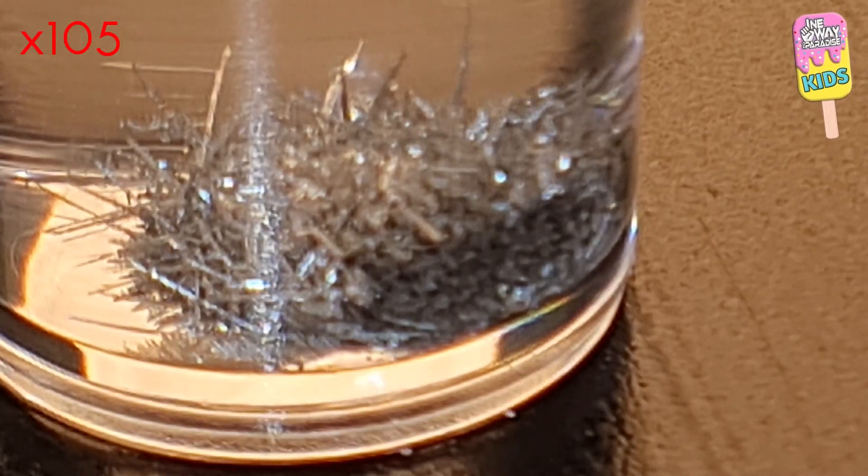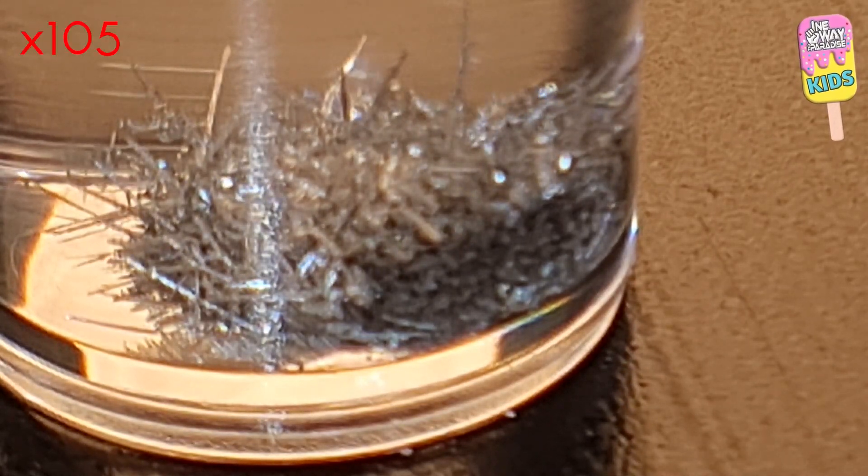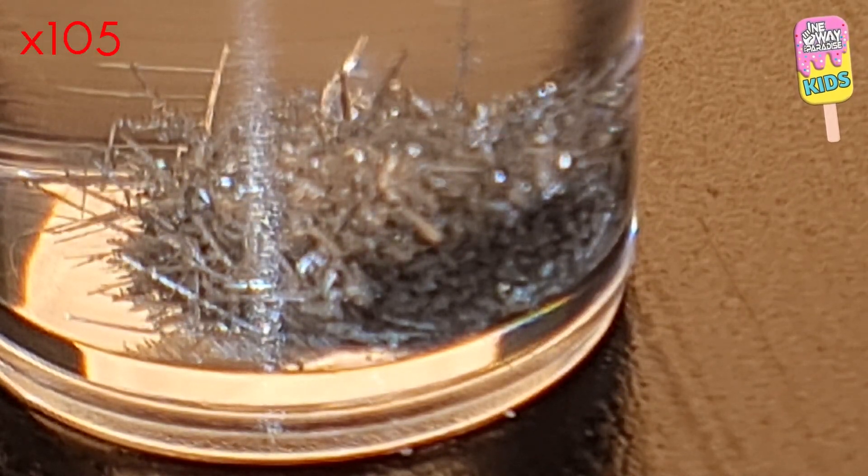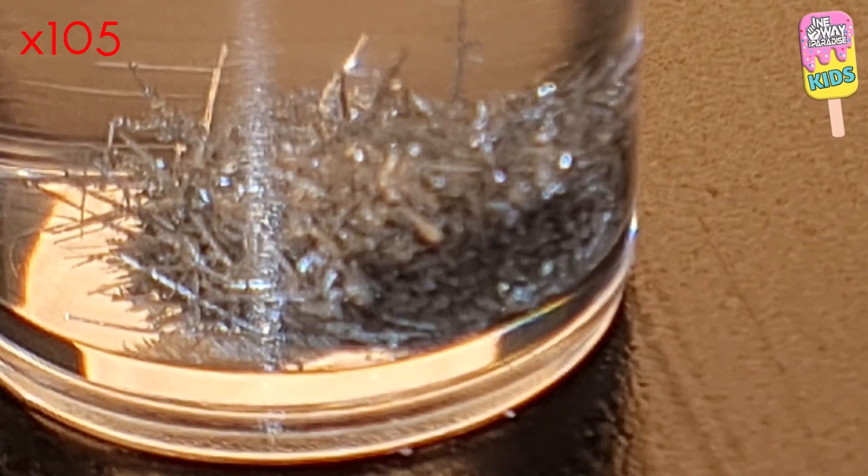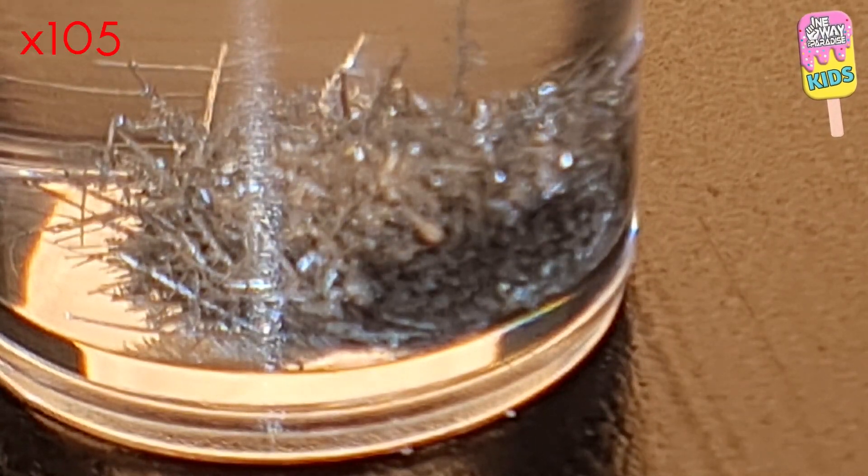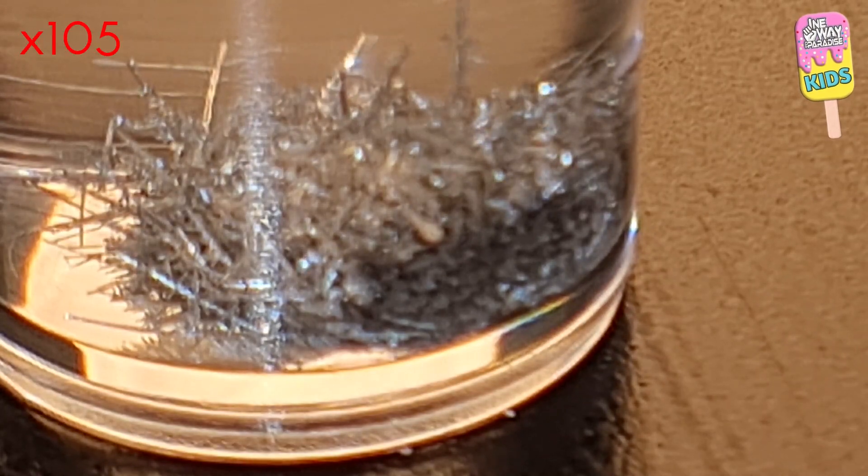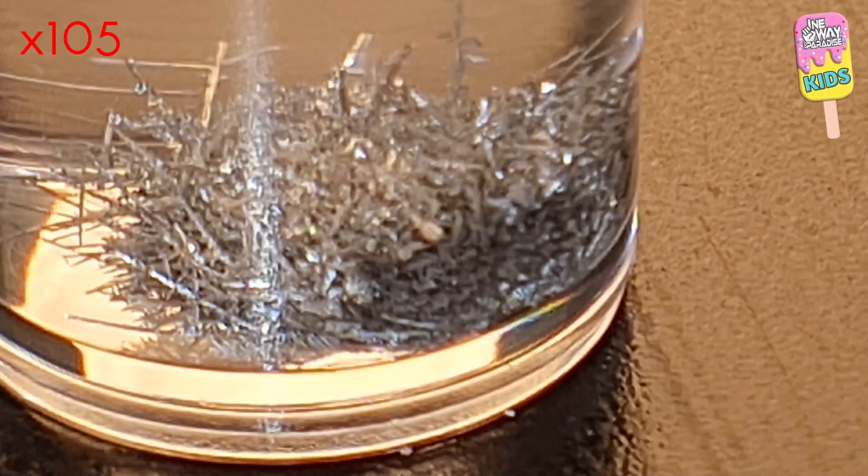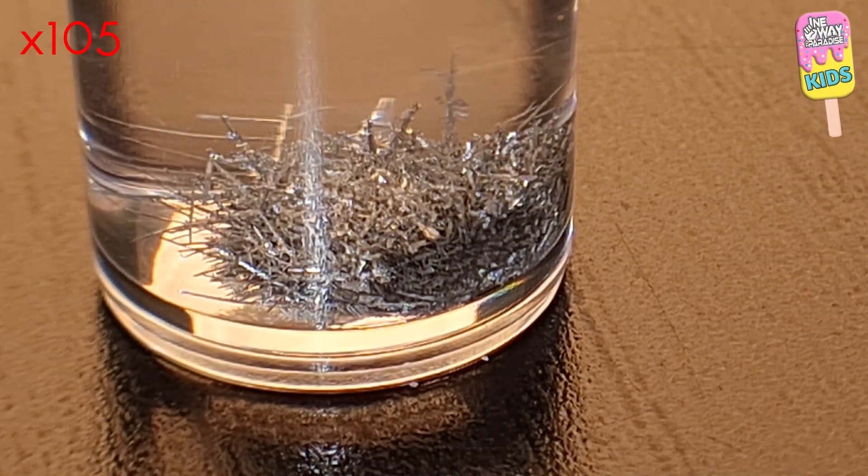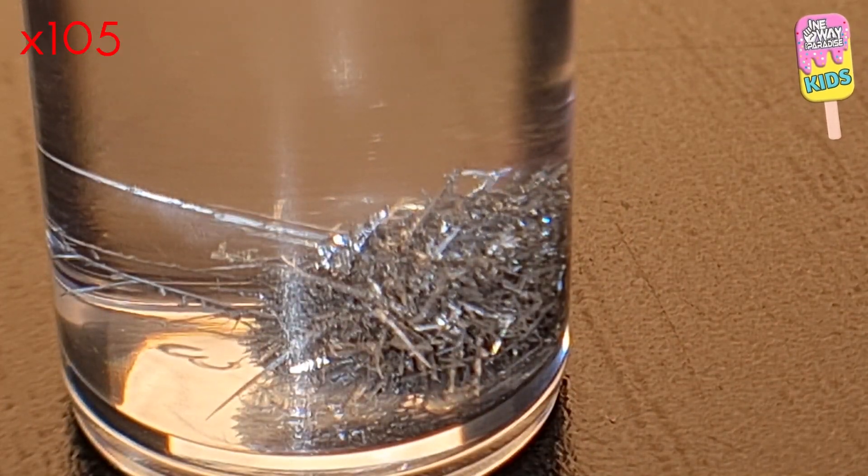As the tin metal is produced, atoms stack on top of each other in a characteristic form or allotrope of the element. The fern-like shape of the zinc crystals is a characteristic of that metal. So while other types of metal crystals may be grown using this technique, they won't display the same appearance.